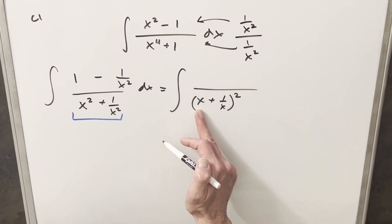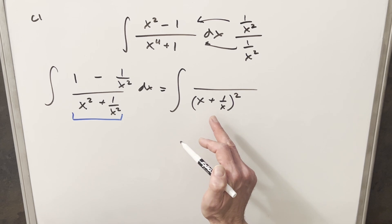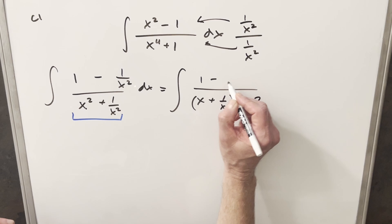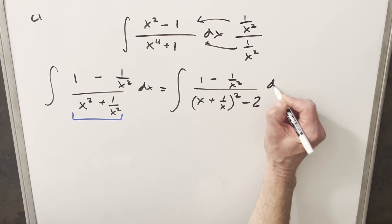Now if we just multiply this out, we get x squared plus 1 over x squared. But then with the middle terms, we're going to have a plus 2. So I can subtract 2, so I'm not changing it. Then we'll just rewrite the numerator here, and we'll have our dx.